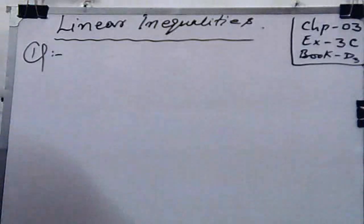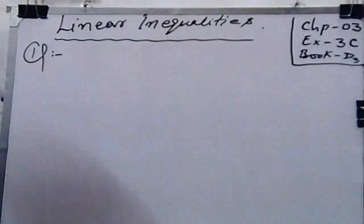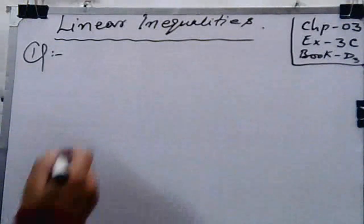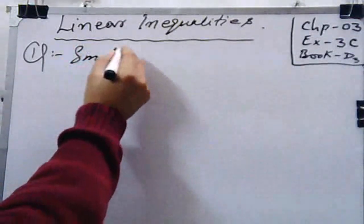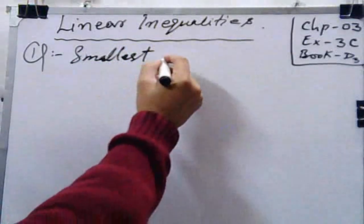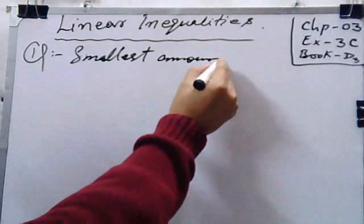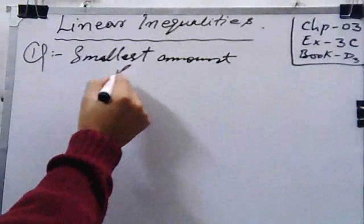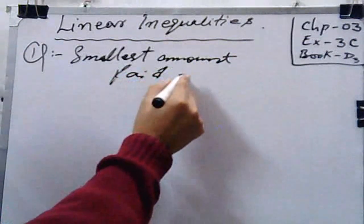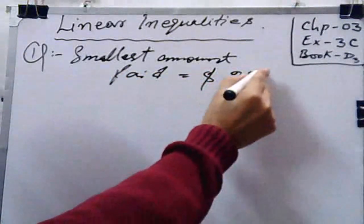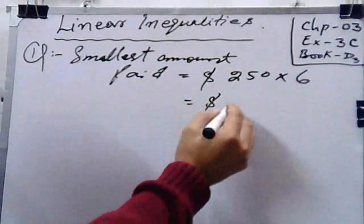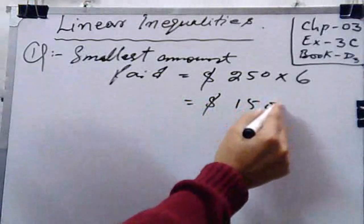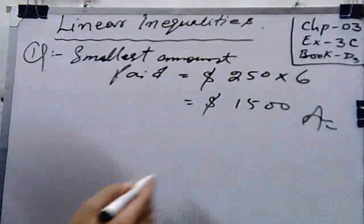After reading the statement, first of all, how can we write the data? Smallest amount paid: $250 to the 6 students, so multiply by 6, you will get $1,500, which is your required result.